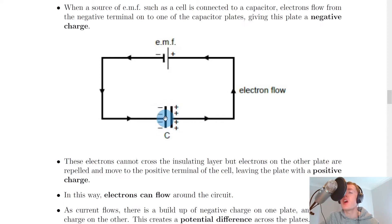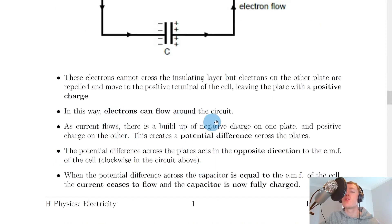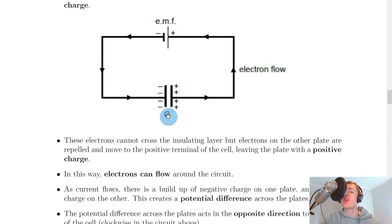So we now have a negatively charged plate on the left and a positively charged plate on the right. This actually sets up an electric field and therefore a potential difference. In this way, electrons can flow around the circuit. The electrons cannot actually cross the gap; it's the electrons over here that are repelling the electrons over here away from it. In this way, the electrons can continue to flow around the circuit.